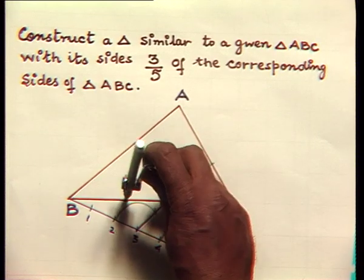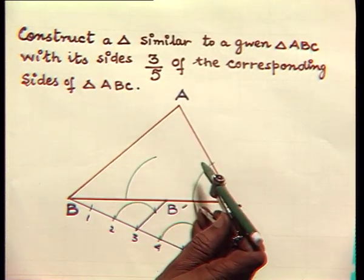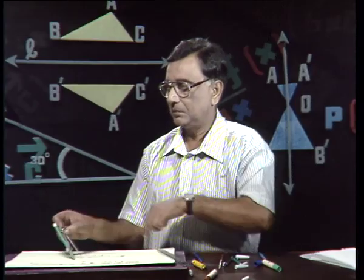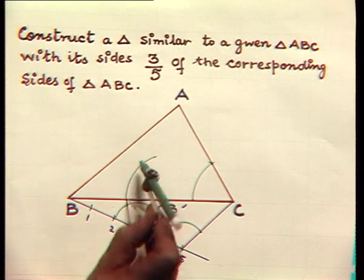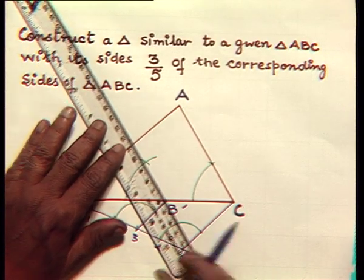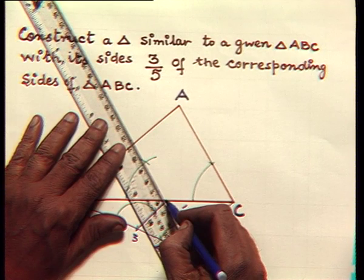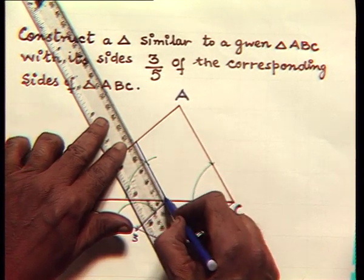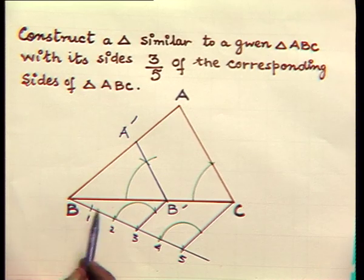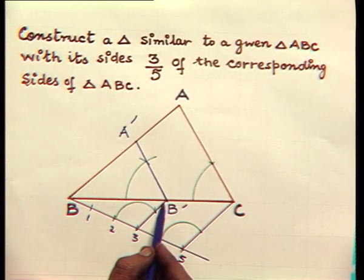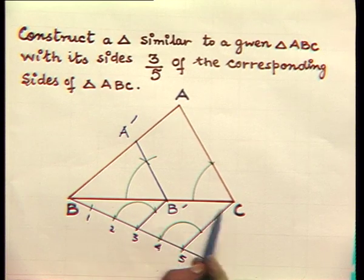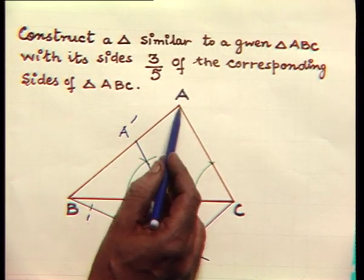We get a point of intersection of the two arcs and we get a point A dash. Now, the triangle A dash B B dash is exactly similar to triangle ABC, but its sides will be three-fifths of the corresponding sides of triangle ABC.